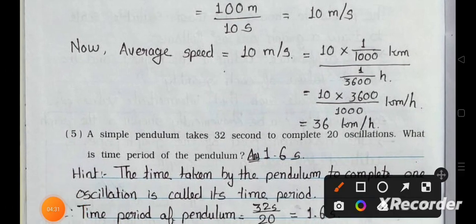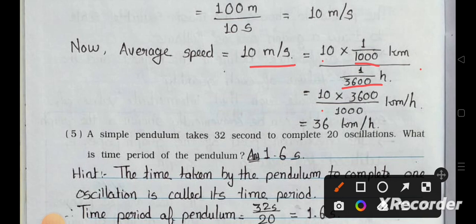Now converting to km/h: 10 m/s × 3600 ÷ 1000 = 36 km per hour. So the average speed of the runner is 10 meter per second, which is equal to 36 km per hour.